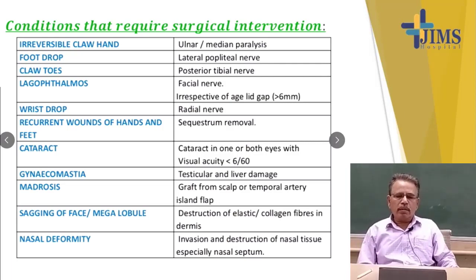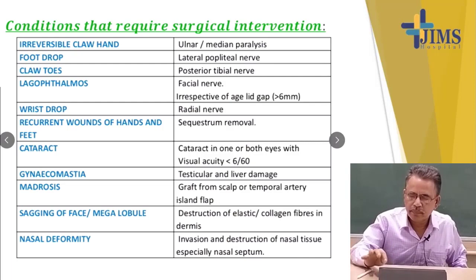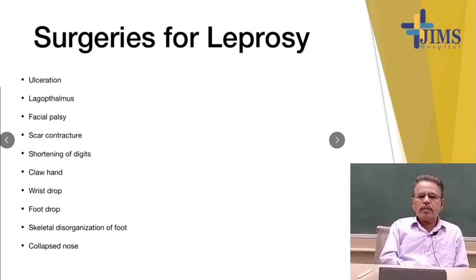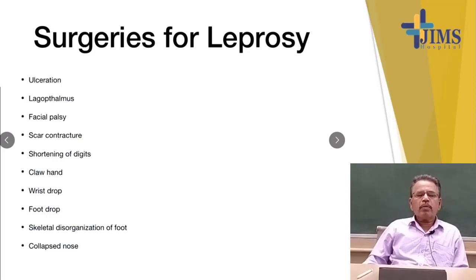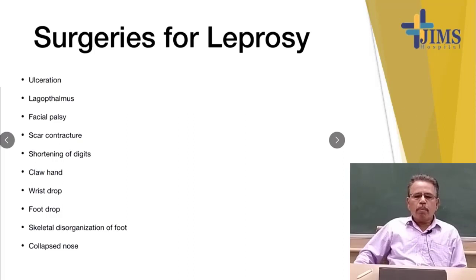There will be nasal deformity from washing of the nasal bone and invasion and destruction of nasal tissue. Surgeries for leprosy depend upon how much destruction has occurred — surgery is beneficial in the initial stage. Operations include surgery for ulceration, lagophthalmos, facial palsy, scar contracture, shortening of digits, claw hand, wrist drop, foot drop, skeletal disorganization of the foot, and collapsed nose.